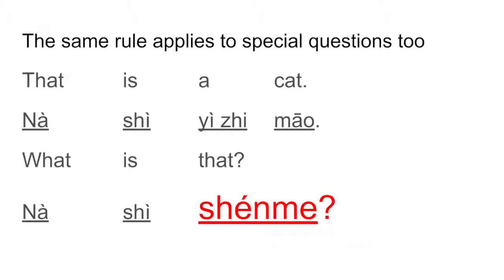The same rule applies to special questions. In English, 'What is that?' — we can see 'that' has changed its place and 'what' comes to the front. In Chinese, 'na shi shemme' — na shi stays the same as in the statement, you just replace 'yi zhi mao' with the question word 'shemme'. That's how Chinese word order works between statements and questions.